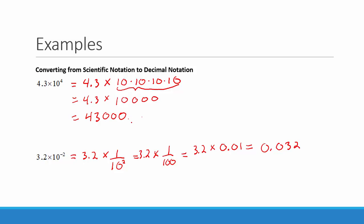Notice where our decimal point is in our first example. It started in between the 4 and the 3, and it moved 1, 2, 3, 4 places. In the 3.2 example, the decimal point moved 1, 2 places. It moved 4 places to the right with the 10 to the 4th, and it moved 2 places to the left with the negative 2 as the exponent on 10.